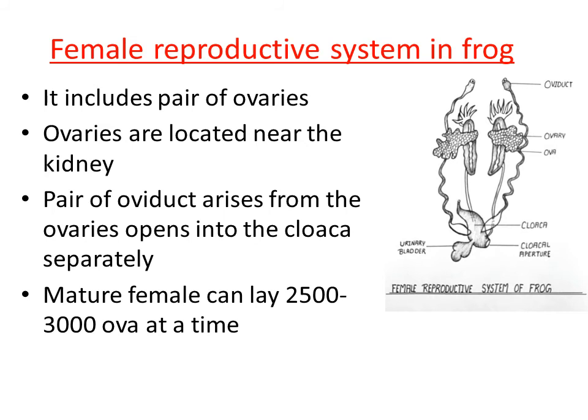In the mature female frog, the number of eggs released from the ovary is nearly 2500 to 3000. So the male frog releases male gametes and the female frog releases female gametes called eggs.